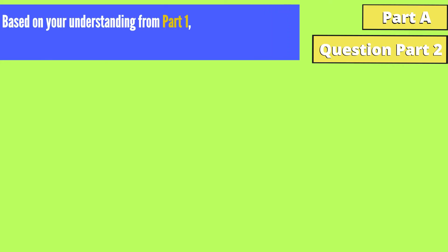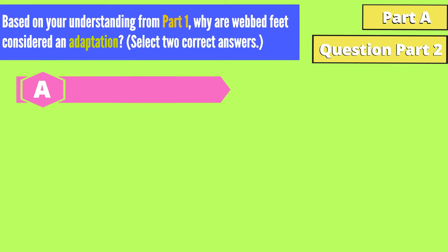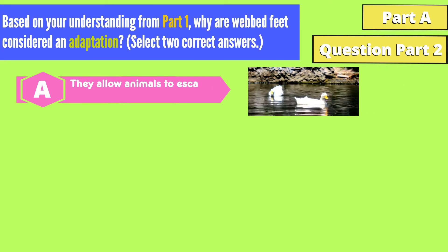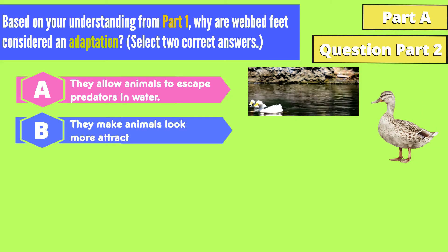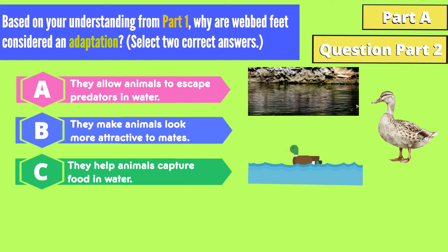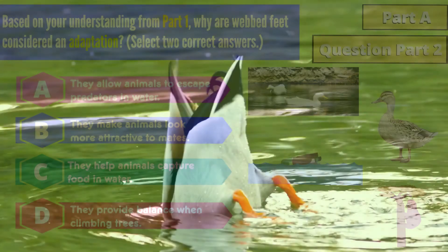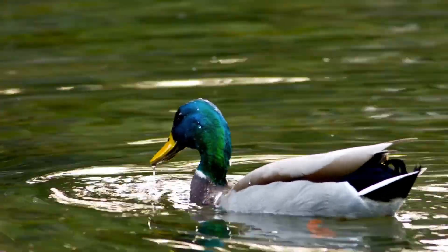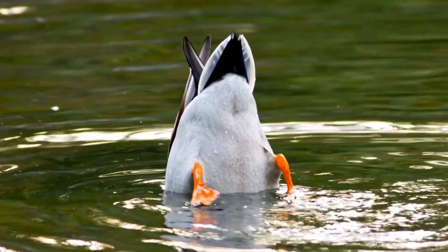Part A, Question 2: Based on your understanding from Part 1, why are webbed feet considered an adaptation? Select two correct answers. A: They allow animals to escape predators in water. B: They make animals look more attractive to mates. C: They help animals capture food and water. D: They provide balance when climbing trees. Quick tip: Reflect on how webbed feet improve survival in water-related activities, such as escaping predators or finding food.